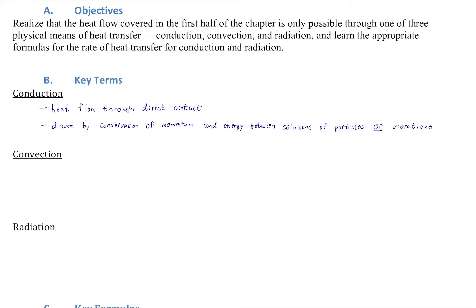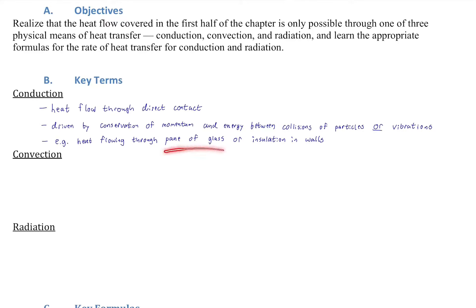Conservation of momentum and energy assumes particles operate in a completely elastic way — the model used for ideal gas internal energy (3/2 NRT). Non-ideal gases can store energy vibrationally as well. It's not always conservation of energy, but it's always conservation of momentum. Examples include heat flowing through a pane of glass or insulation walls.